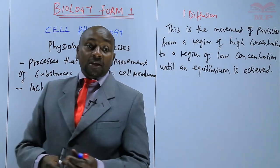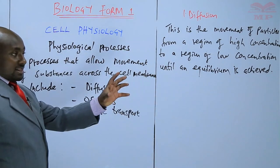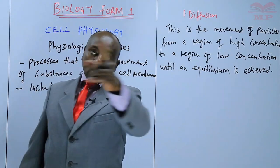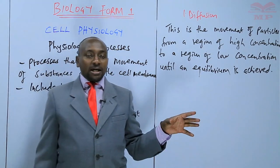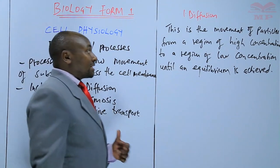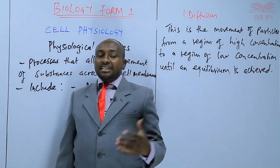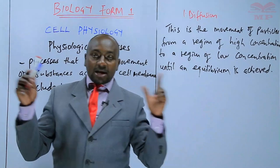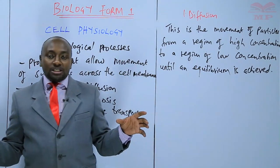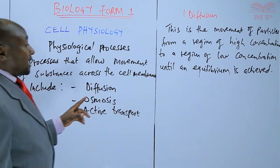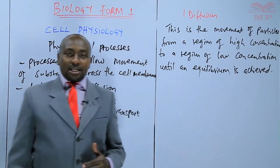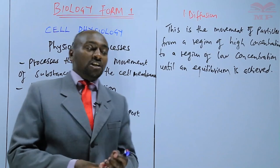For example, if I have a gas here that has a very strong smell and I release it, it will spread throughout the room. The spreading out of those gas particles is by diffusion. We say that those particles have diffused until such a time that the entire room has those particles and you can get the smell of that particular gas.